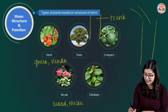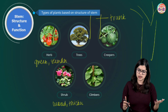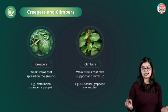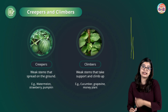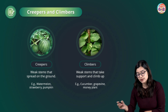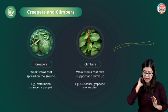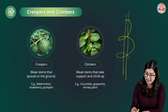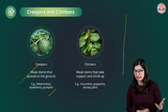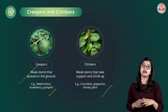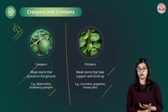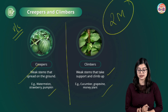In creepers and climbers, the stems are weak and cannot stand upright — unlike herbs, shrubs, and trees. Creepers are found creeping or spread horizontally on the ground, like pumpkins and watermelons. Climbers, like grapes, climb on a support and grow vertically. This is an important difference to know because they can ask you to differentiate between creepers and climbers with examples for two marks.